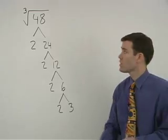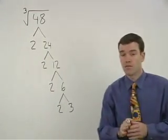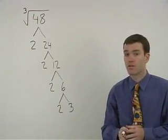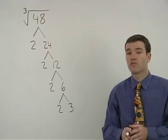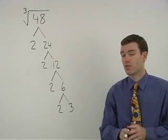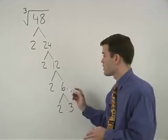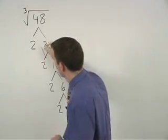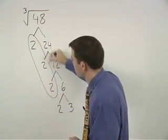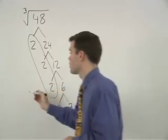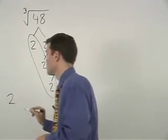The difference with a cube root is that instead of looking for pairs of factors that are the same, we're looking for groups of 3 factors that are the same. And here you'll notice that we have a group of 3 2's. So a 2 will come out of the cube root.